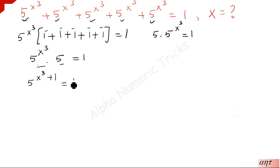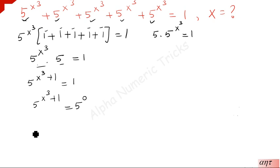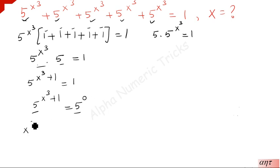Suppose we make the right-hand side also in terms of phi, then we can compare the powers and get the answer. So phi to the power x cube plus 1 equals 1, and this 1 can be written as phi to the power 0, because anything to the power 0 equals 1. Here the base is 5, so you put 5 to the power 0. Now the base is the same, so equate the powers: x cube plus 1 is equal to 0.